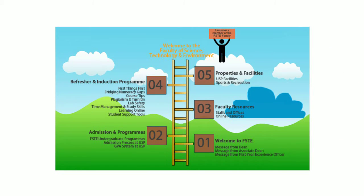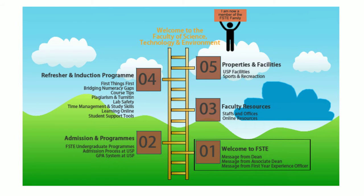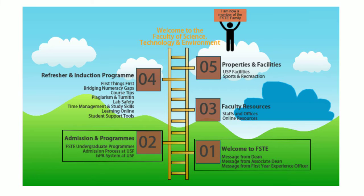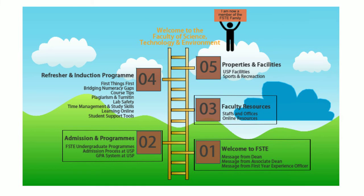The online orientation comprises five sections. The first section is the welcome section, where you will be welcomed by the faculty dean, associate dean and the first year experience officer. Section 2 gives an overview of the types of programs offered at USP, the admission process and the GPA system. The third section covers the resources available to you for support and assistance with your studies and having you connected to FSTE throughout your time here.